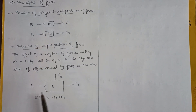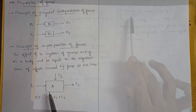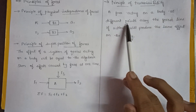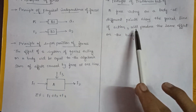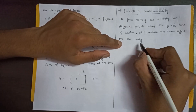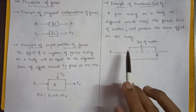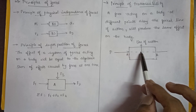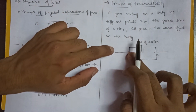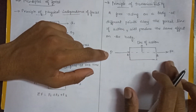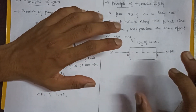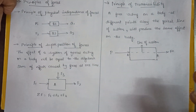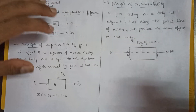The principle of transmissibility of forces states that a force acting on a body at different points along its line of action will produce the same effect on the body. For example, consider a force P acting on a rigid body at point A. If we move the force P from point A to a different position B along the same line of action, the object will move to the same destination. This principle is really important, and many exam problems are related to it.